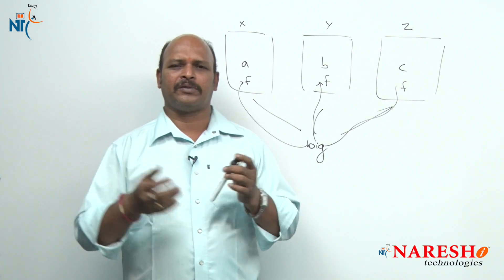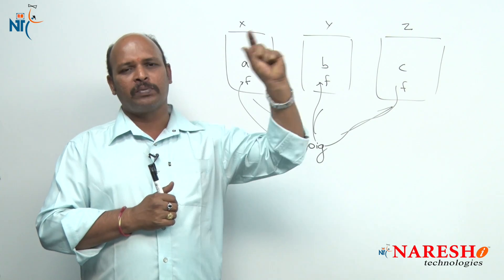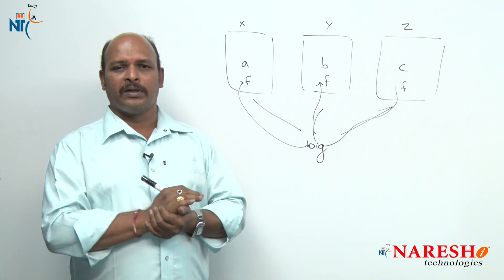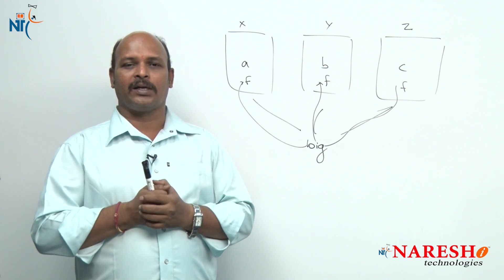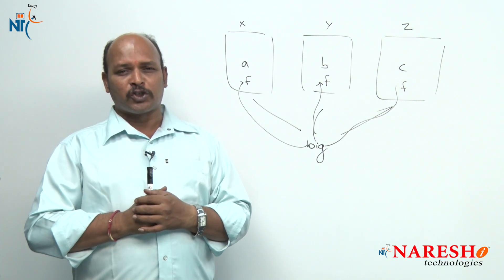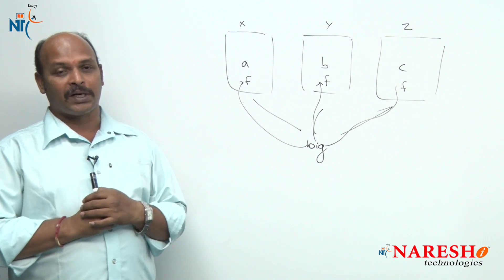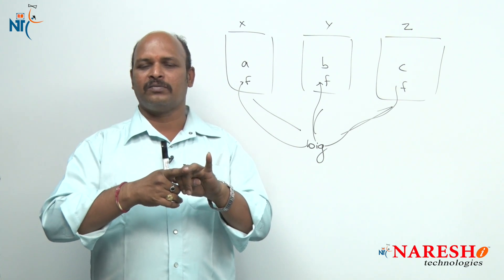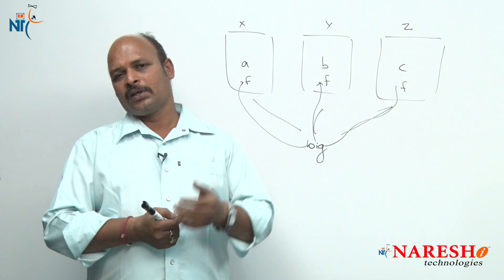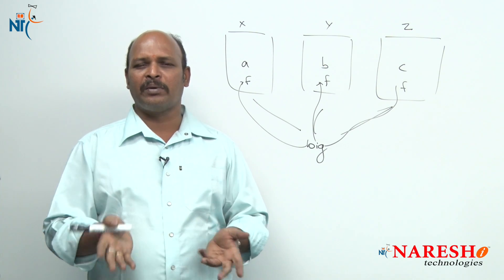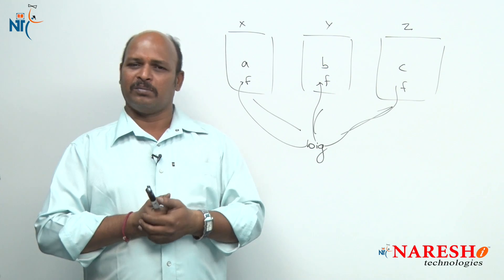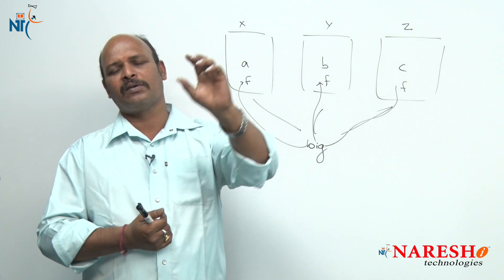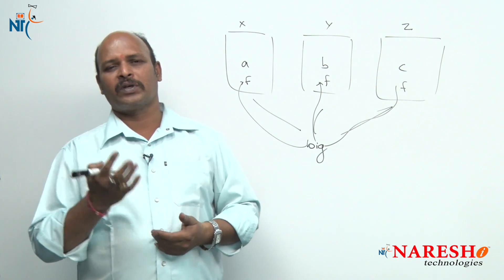Now, what are the rules and regulations for friend functions? First, the friend function name may be anything — there is no relation between the class name and the friend function name. Second, unlike constructors which must be declared in the public section, a friend function can be declared in private, public, or protected — anywhere in the class — because it is a non-member, so wherever it is declared the meaning is the same.